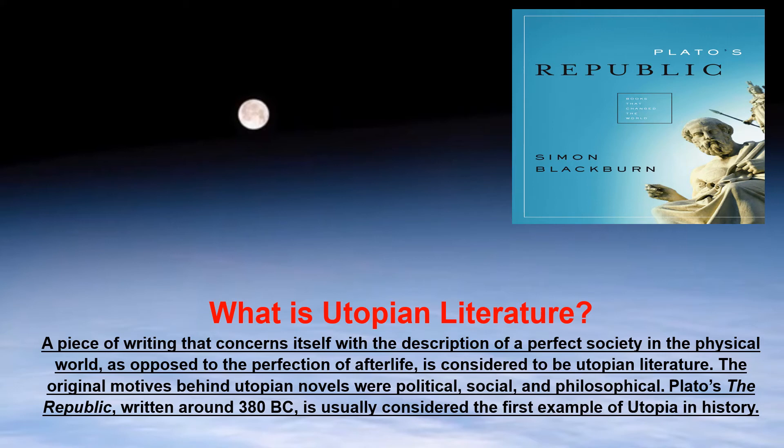Utopian literature translates into a perfect world, a perfect universe, or a perfect society in a physical world — as opposed to the reality we have now. The motives of utopian literature are often political, social, or philosophical. For example, Plato's The Republic is the first example of utopia in the history of literature.